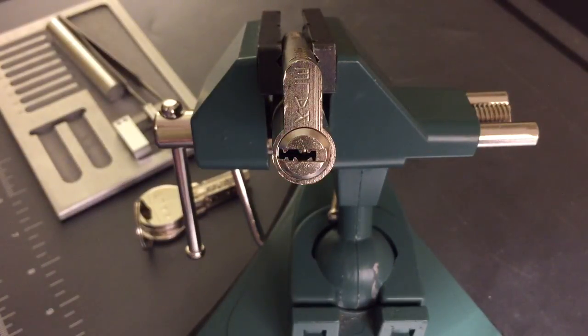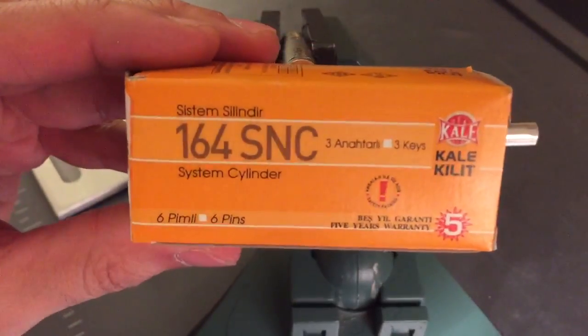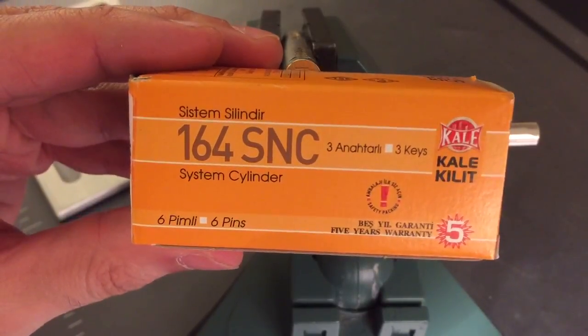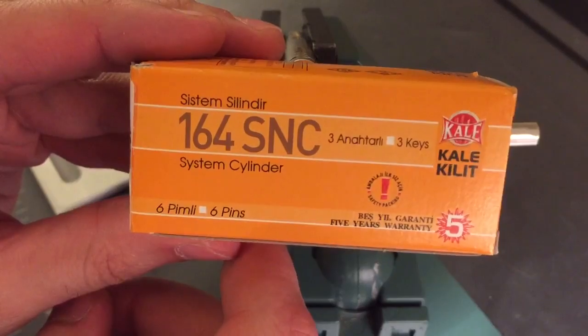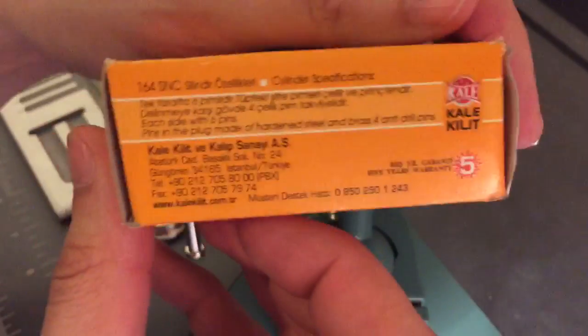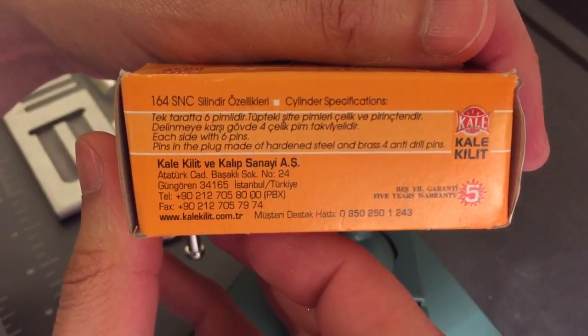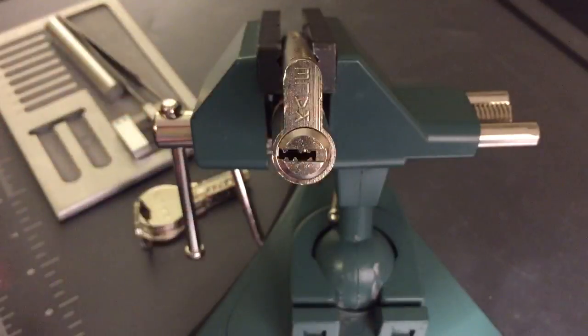This is The Lockpicking Lawyer. The lock I have for you today is a Kale Kalit Model 164 SNC. Unlike most locks that make their way to me, this one came with a box. As you can see, it came with three keys and was made in Turkey, which is not exactly the hotbed of lock manufacturing.